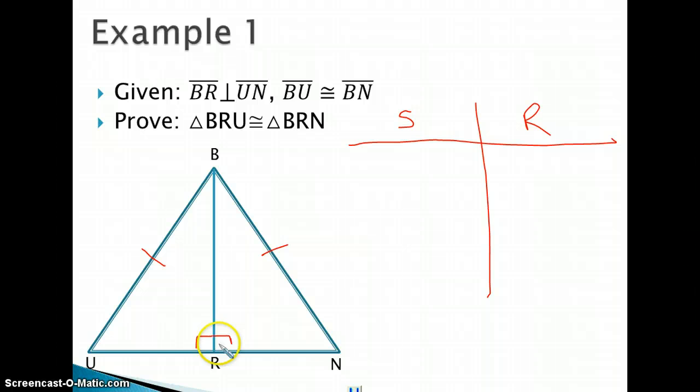And that's at angle, or point R. So angle BRU, and angle BRN are right angles.